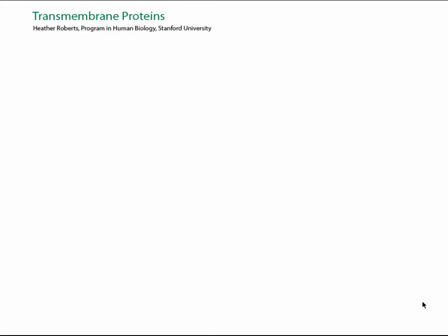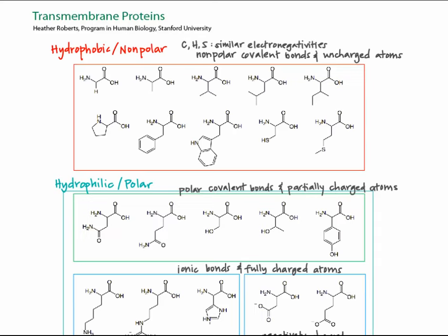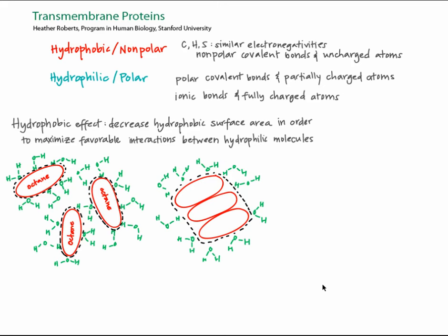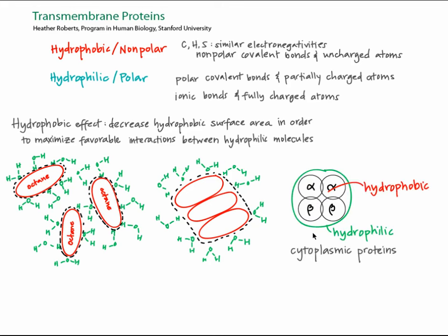In the amino acids and protein structure tutorial, we talked about the chemistry of protein synthesis and folding. We differentiated between hydrophilic and hydrophobic amino acids based on their R groups. Because of the hydrophobic effect, which decreases hydrophobic surface area to maximize favorable interactions between hydrophilic molecules, proteins in the cytoplasm have mostly hydrophilic amino acids on the surface, while hydrophobic amino acids are tucked into the interior, away from the cytoplasm.